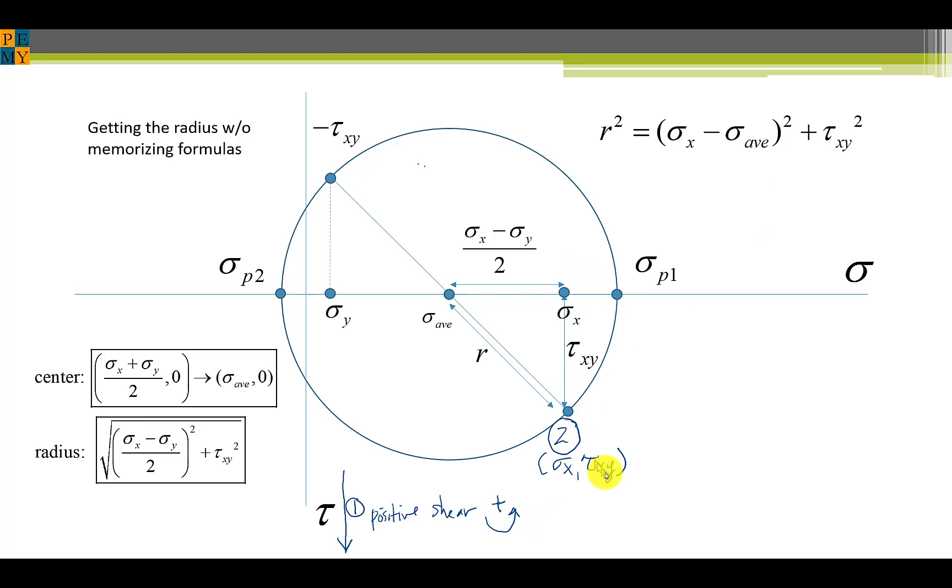Next we plot sigma x and tau xy on the axis. So here is sigma x and tau xy is this value. We plot point 2 and of course then we can plot sigma y as point 3 negative tau xy. That will create a diameter and the middle of the diameter which intersects the sigma axis is sigma average.